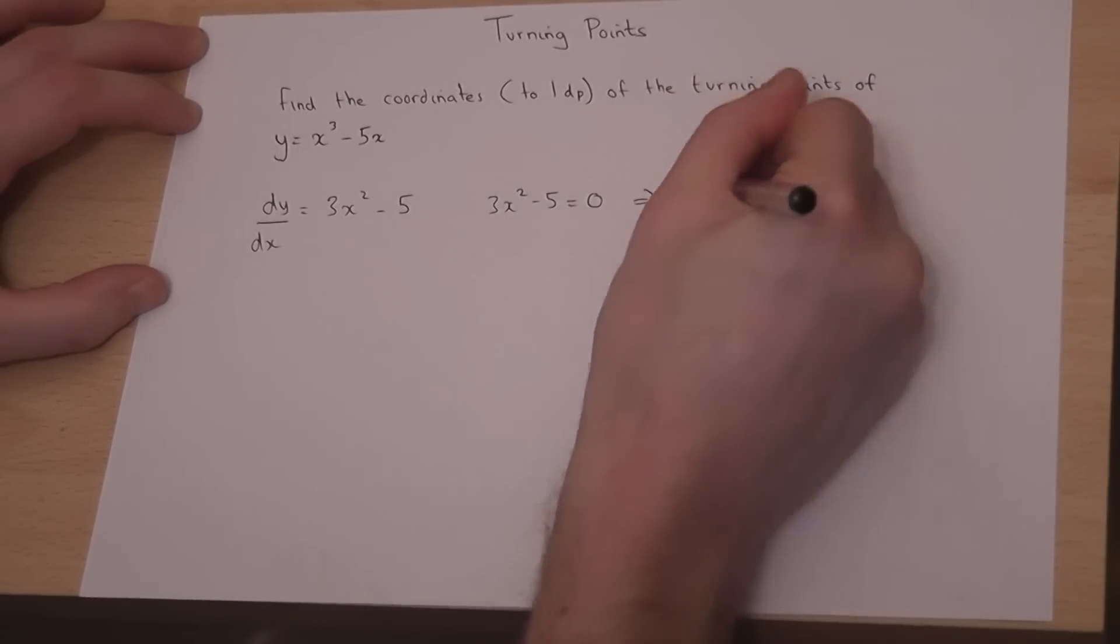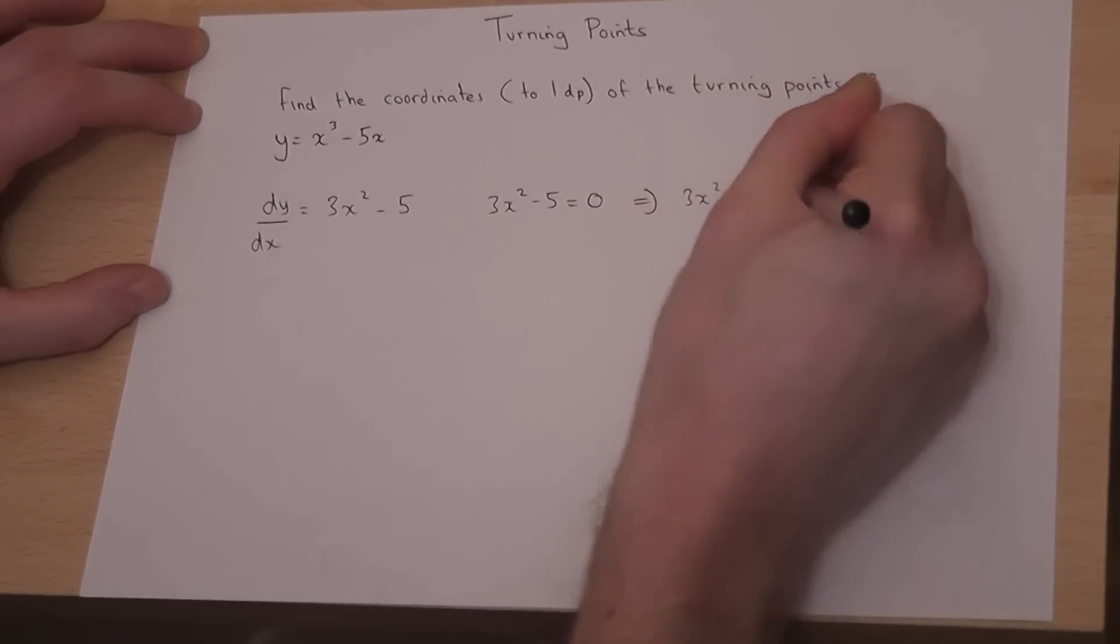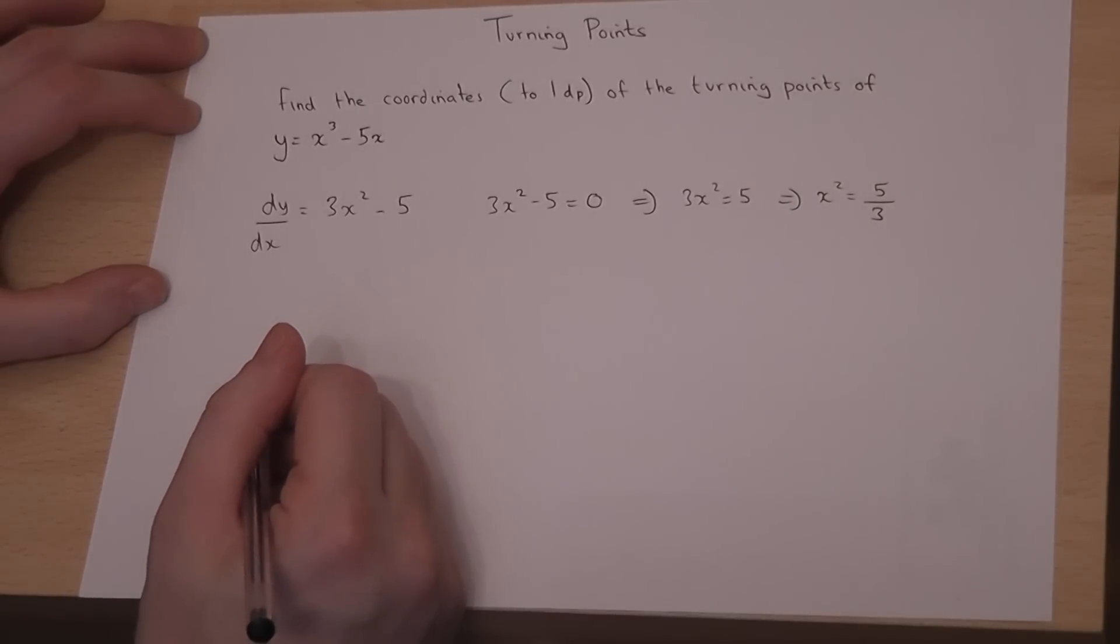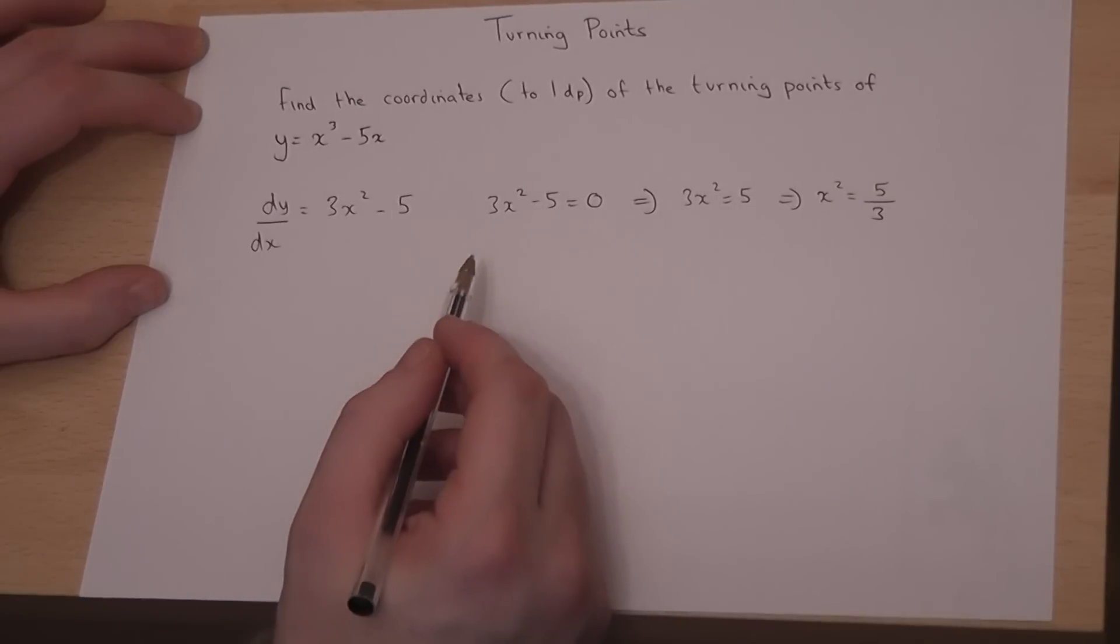Well, this means that 3x squared must equal 5, therefore x squared equals 5 over 3. So therefore, to find out where the turning points are, I must find the square root of 5 over 3.